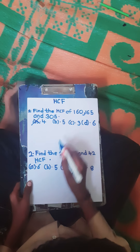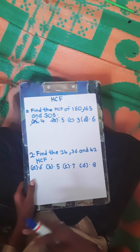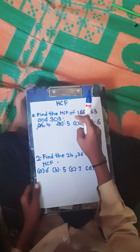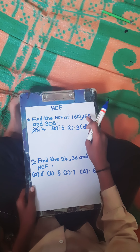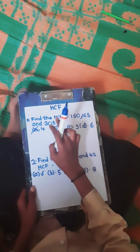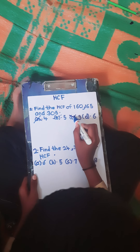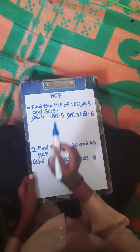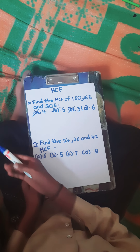305 also divides by 5, so we will tick mark 5. Now checking 3: 3 does not divide 160, 165 is divisible by 3 but 160 is not, and 305 is also not divisible by 3. So 3 is eliminated. Only 5 divides all numbers.